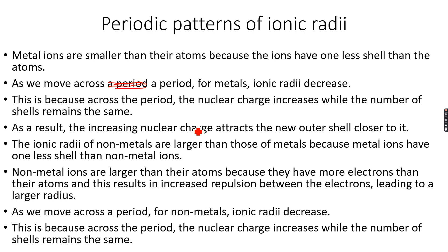As we move across a period, for non-metals, ionic radii decrease. This is because across the period, the nuclear charge increases while the number of shells remains the same. These are all the explanations which explain the graph that we did earlier.